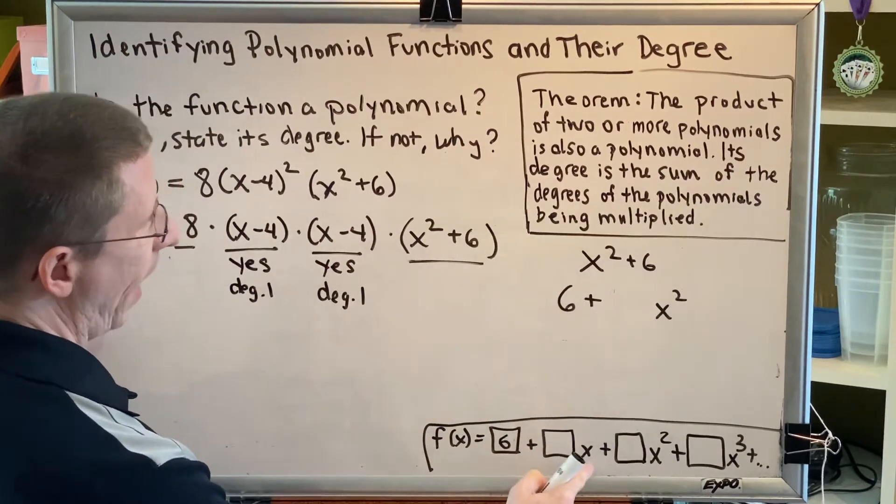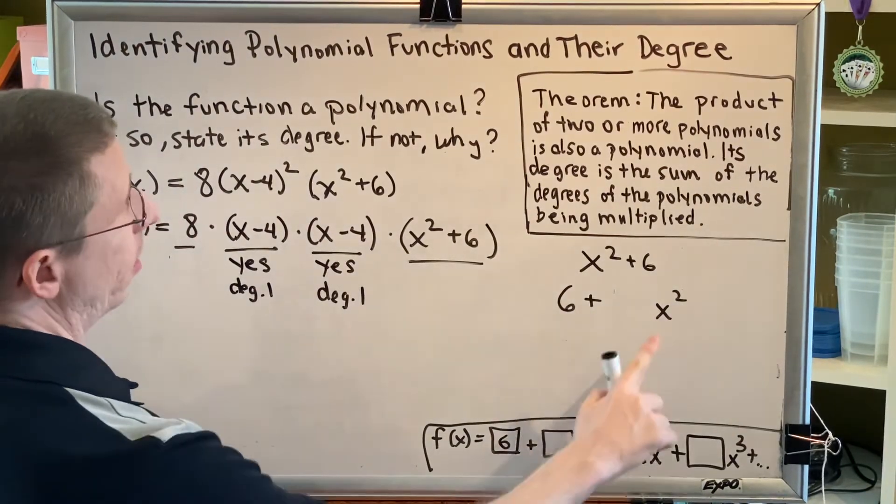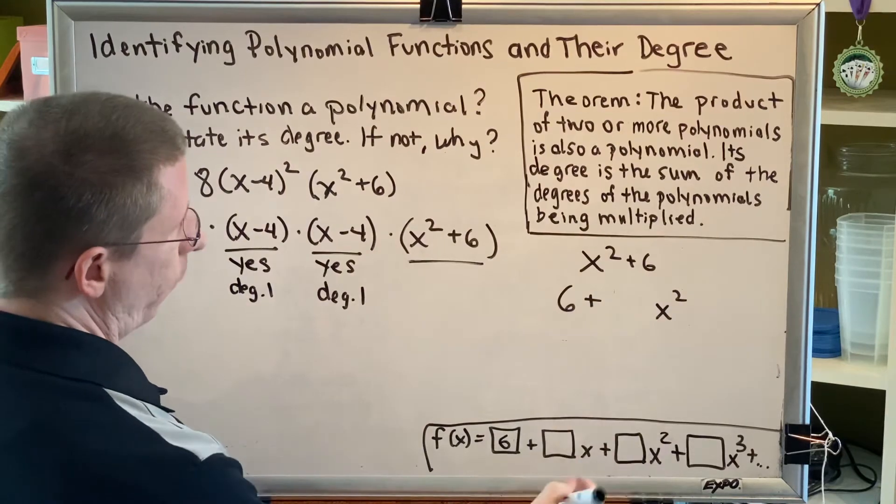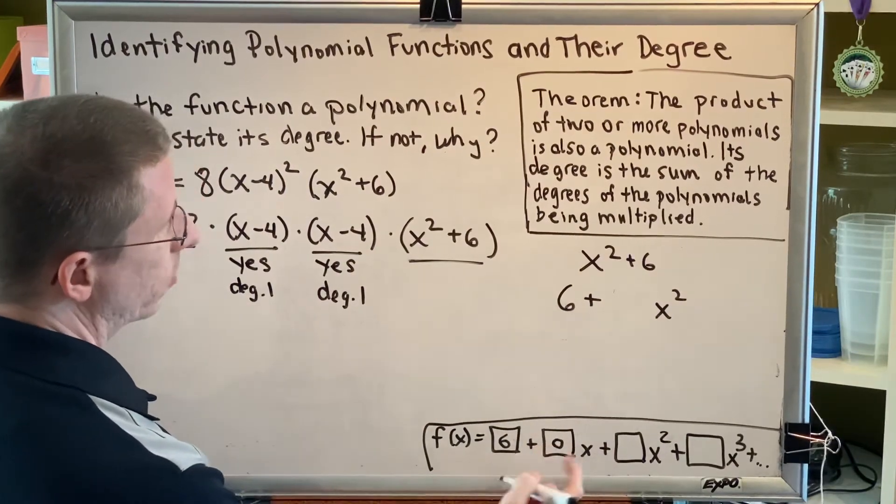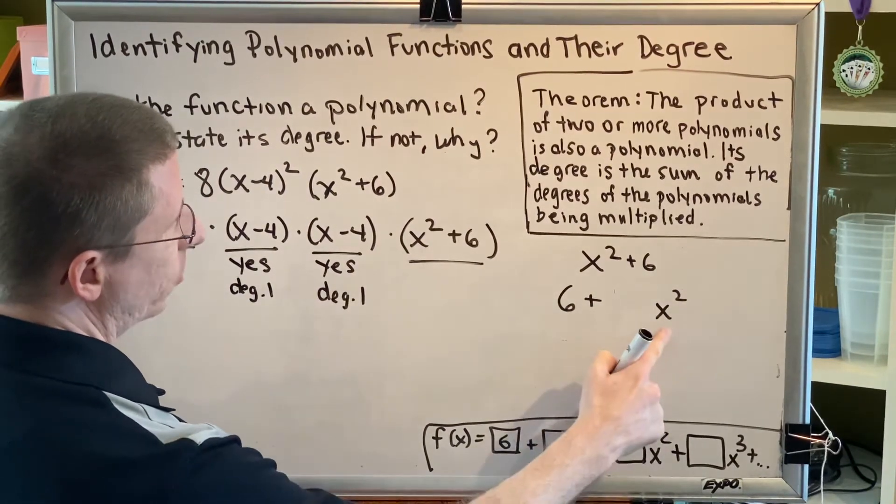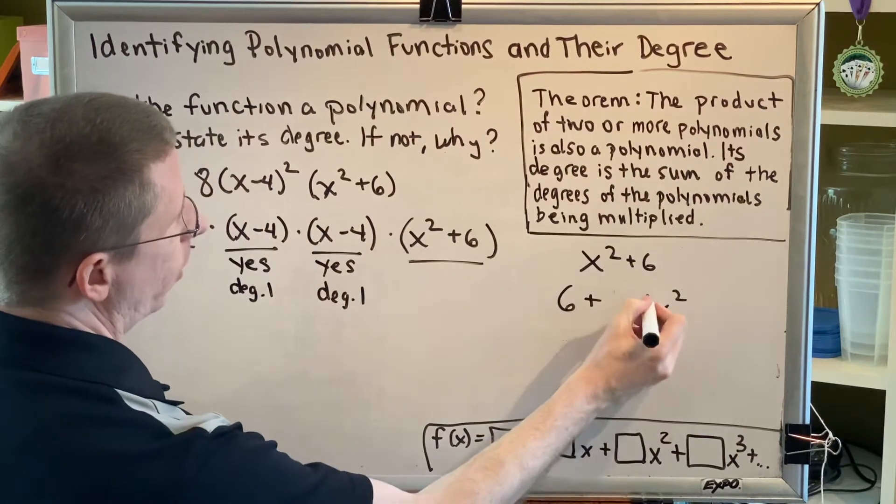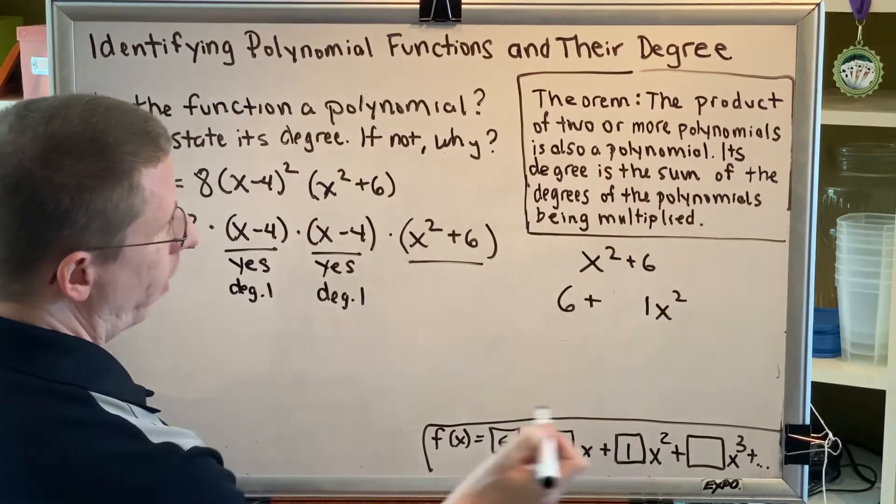What term has just x as its variable? None. This is x squared. Those are different, so I'd have to put a 0 in this box. What term has x squared? Well, it's this x squared with a coefficient of 1, so I put a 1 in the box.